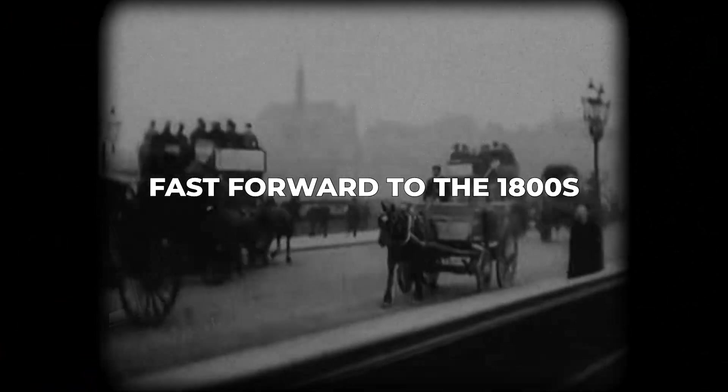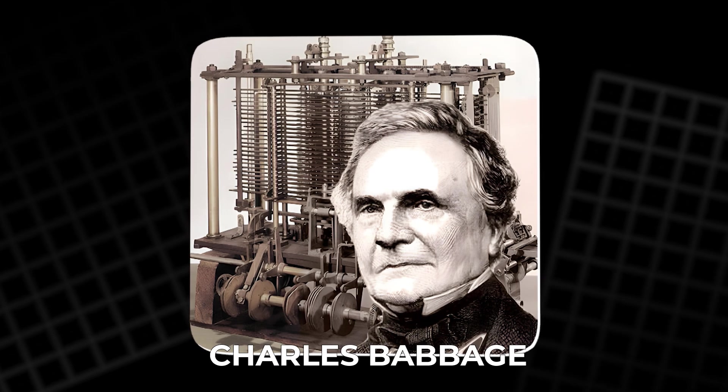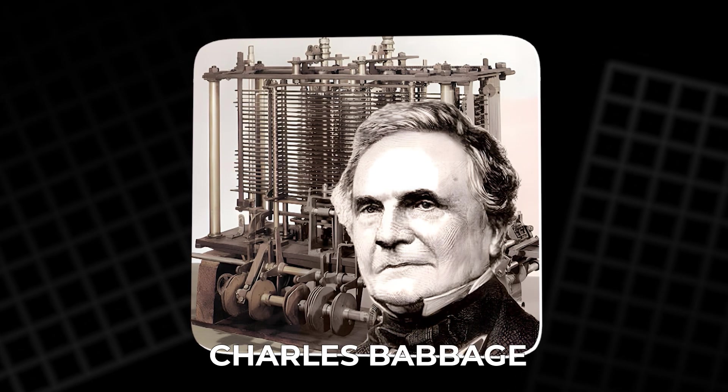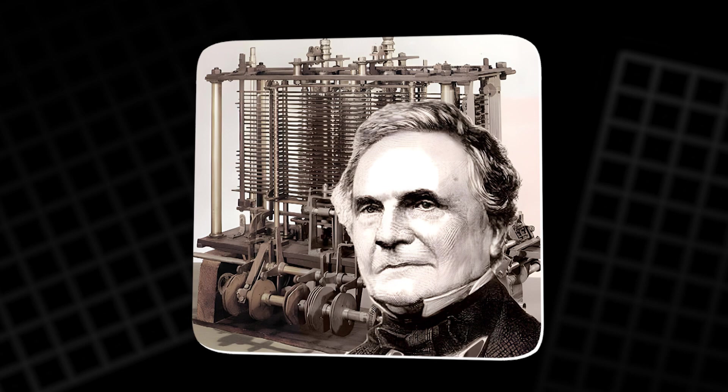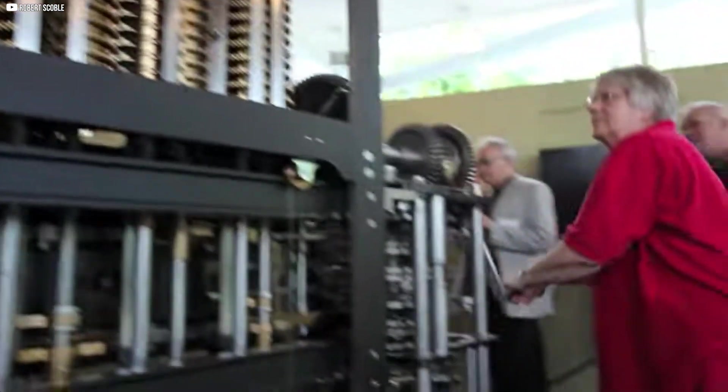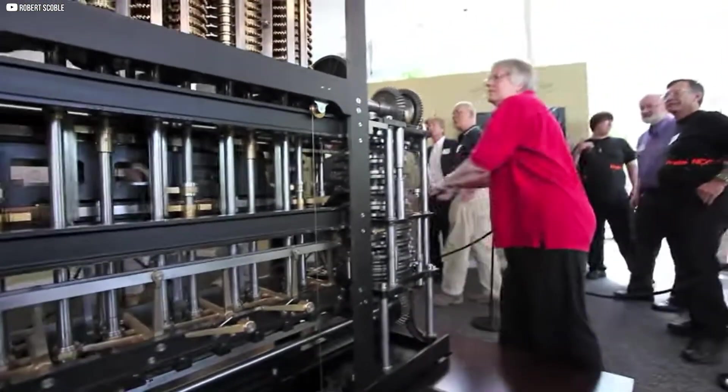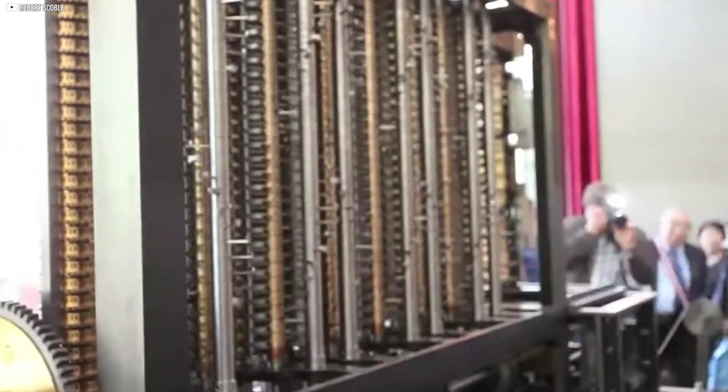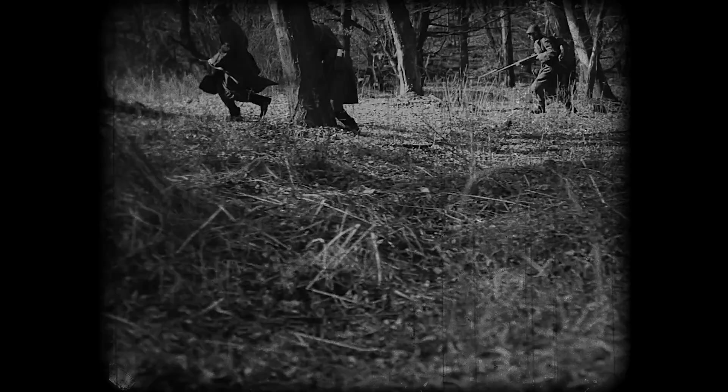Fast forward to the 1800s. Charles Babbage developed his Difference Engine, a mechanical marvel full of gears and levers. By cranking the machine, you could calculate interest rates, longitude, and even complex navigation data. Analog had matured. Then came World War II.